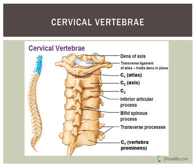The first two cervical vertebrae have special names. The first is the atlas — from mythology, Atlas supported the world on his shoulders, so the atlas supports your neck and articulates with the occipital condyles of the occipital bone. The second cervical vertebra is the axis, which has a special structure called the dens. C1 and C2 do not have intervertebral discs between them.